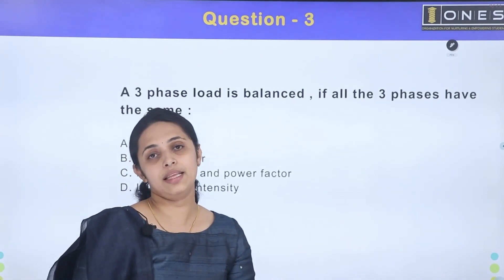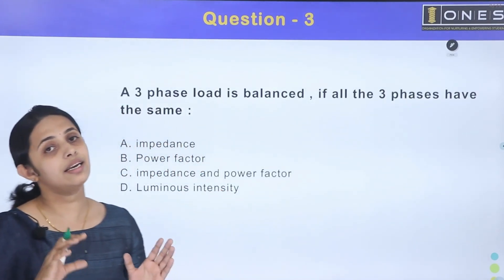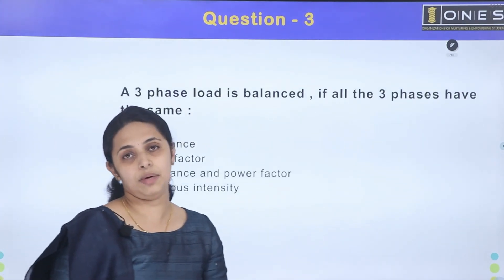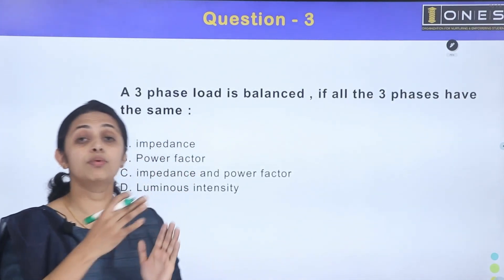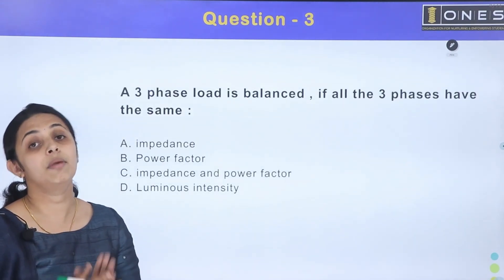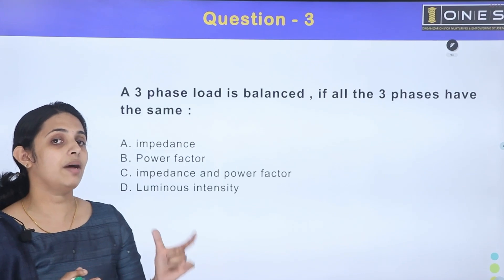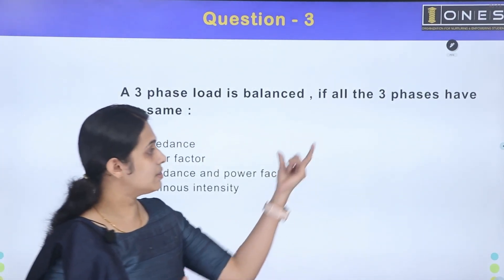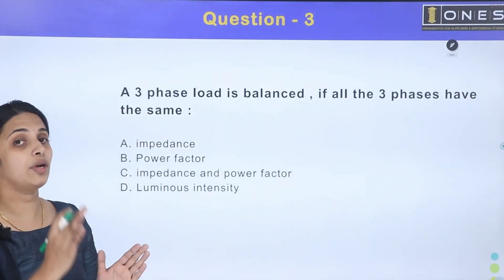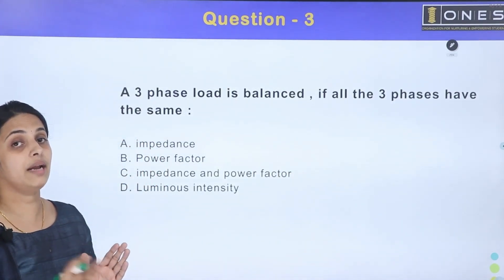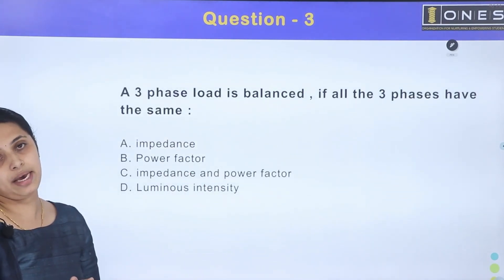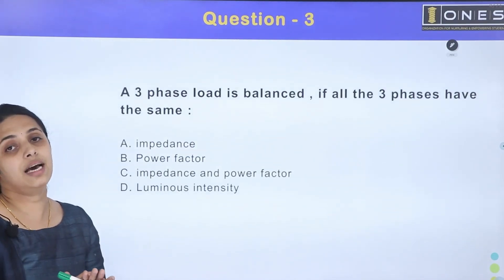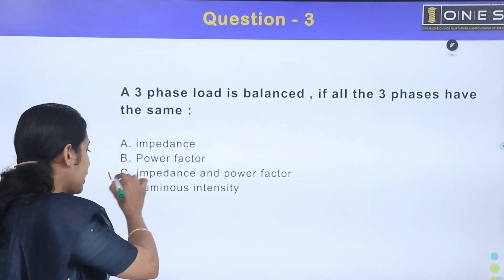For three phases to be balanced, the current values must be the same across all three phases. The load is the same, meaning the impedance is the same and the power factor is also the same. So option C is the correct answer.